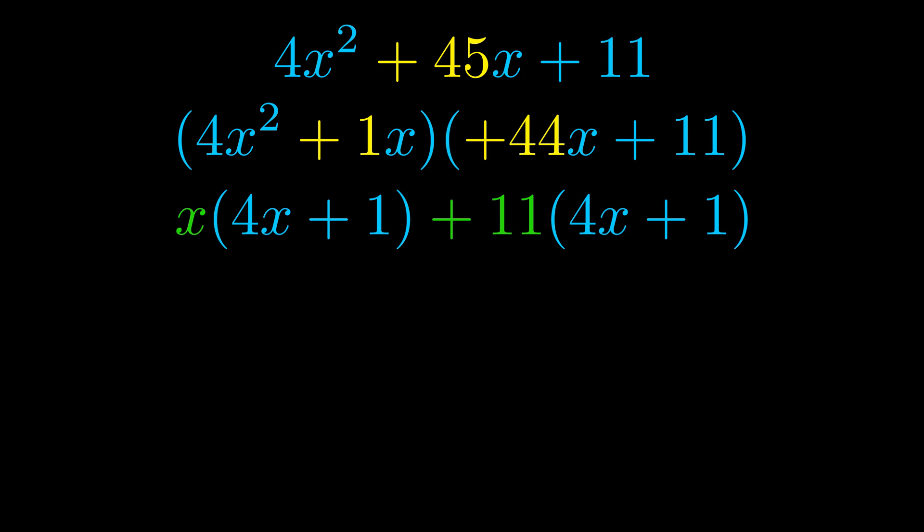Notice also how what remains inside of the parentheses is the same in both cases. The blue values are the same. Those blue values will become one of our factors and we will combine the two green values, the GCFs that we pulled out, to get the other one.